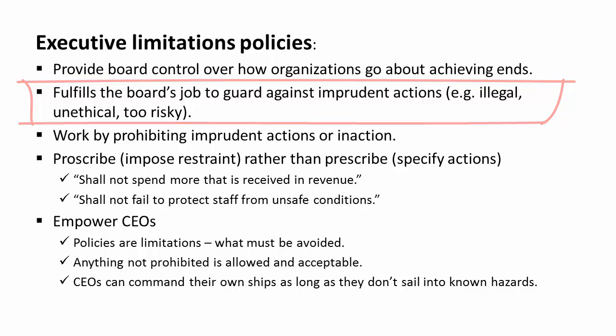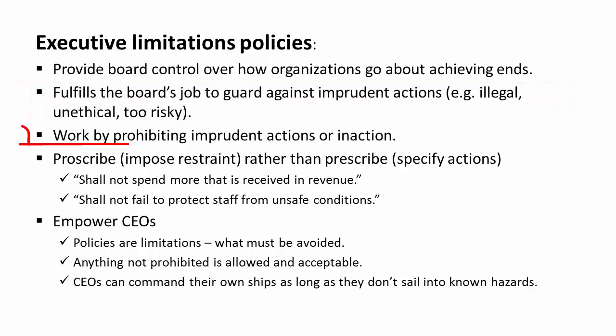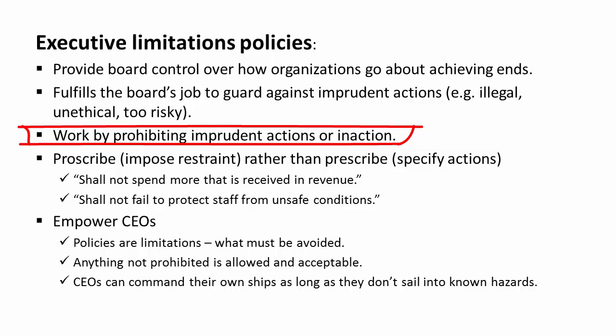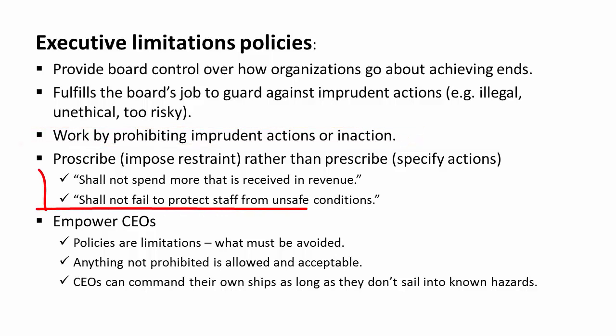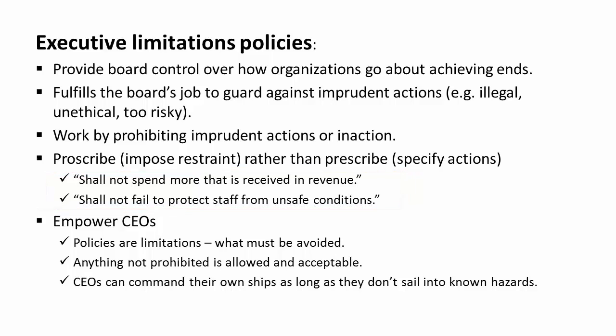Executive limitations work by defining and prohibiting imprudent actions, and the limitations are commonly worded negatively — so, 'shall not' or 'shall not fail to.' Two examples: the CEO shall not spend more than is received in revenue, or the CEO shall not fail to protect staff from unsafe conditions.